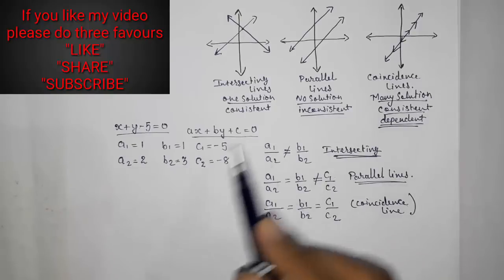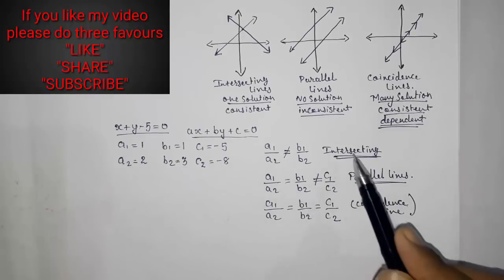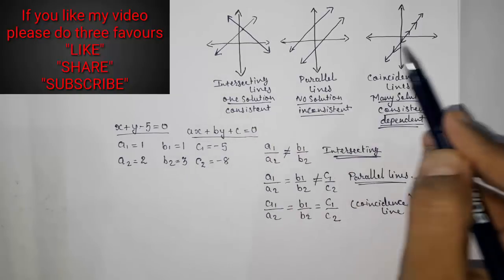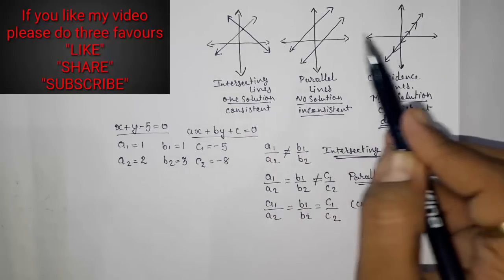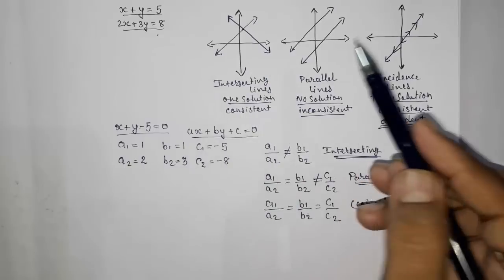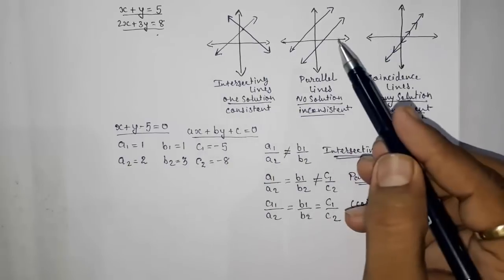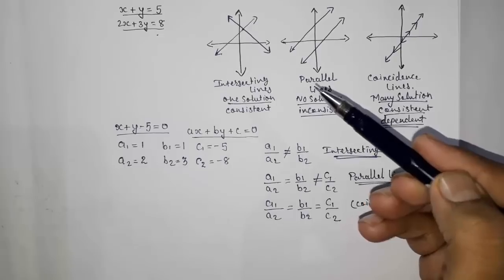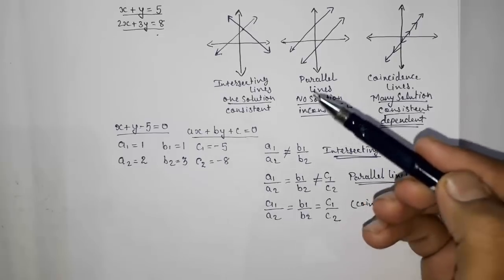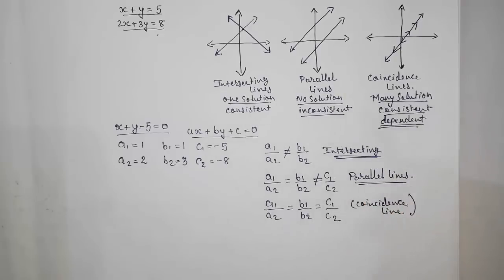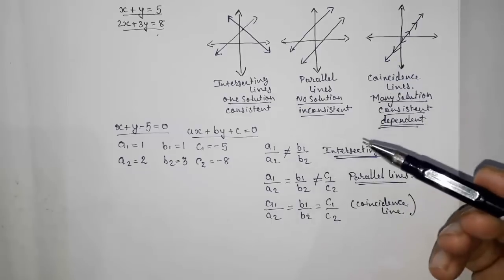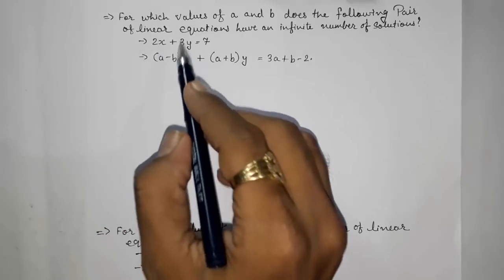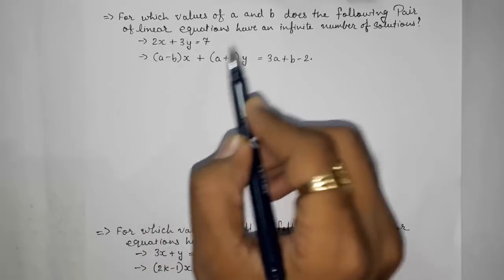So with these ratio conditions we can find whether lines are intersecting, parallel, or coincident. This is the graphical method for finding the solution. There are three other methods: elimination, cross multiplication, and substitution. I have made different videos on those and will give you the links in the description.